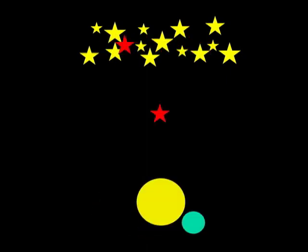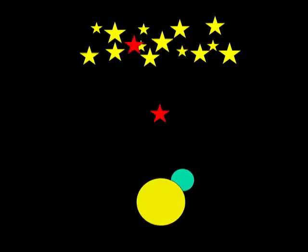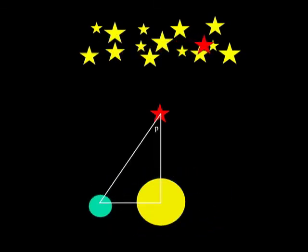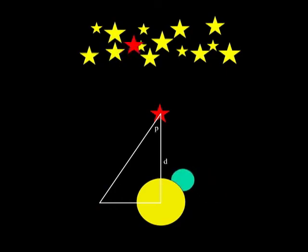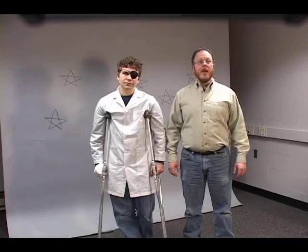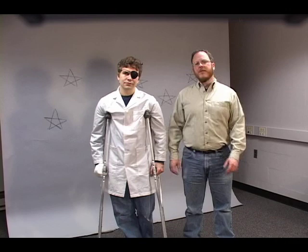Why are they moving? Because the Earth is going around the Sun. If we measure the parallax of a star as the Earth moves from one side of the Sun to the other, we can measure its distance. Using basic geometry and this method, astronomers have measured distances to hundreds of thousands of stars out to about 200 parsecs away.